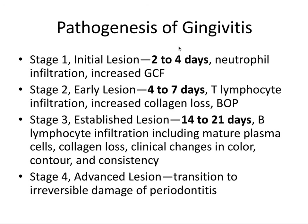There are four stages in the pathogenesis of gingivitis. Stage 1, the initial lesion, occurs within two to four days and starts with neutrophil infiltration — the first line of defense. Stage 2 is the early lesion, from four to seven days, where T lymphocytes step up to respond. In the early lesion, you see increased collagen loss and bleeding on probing — classic signs of gingival inflammation.